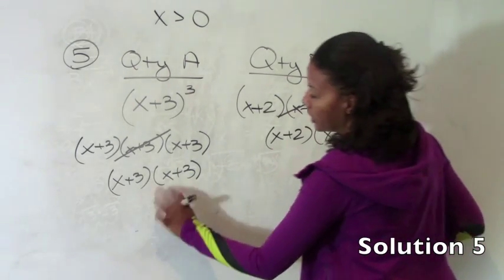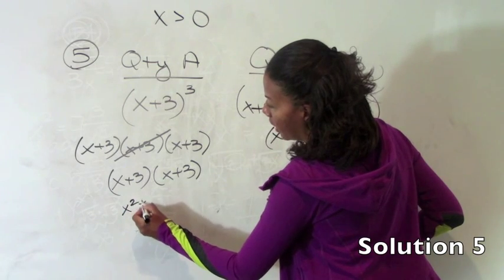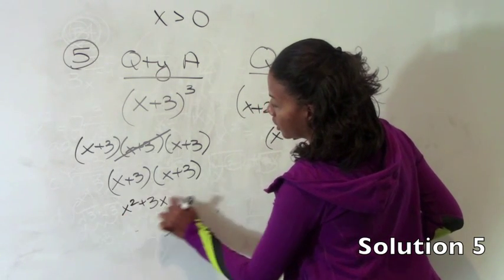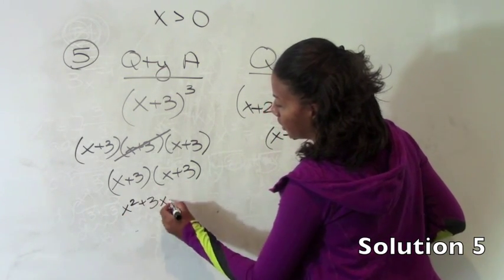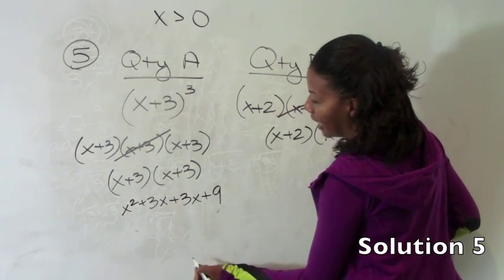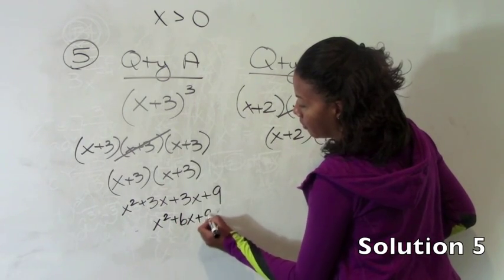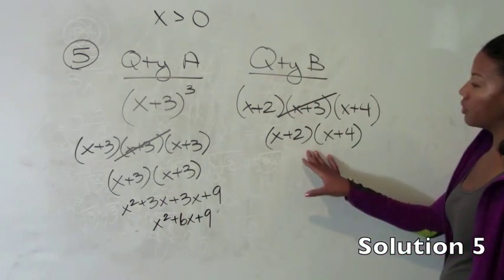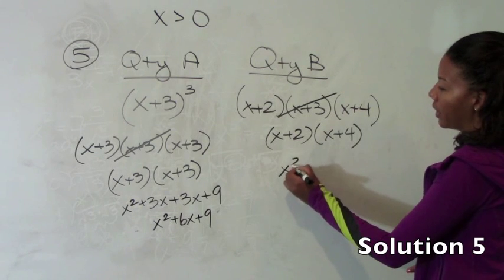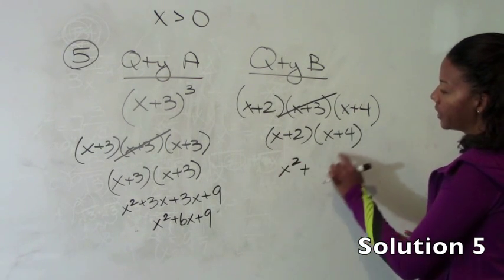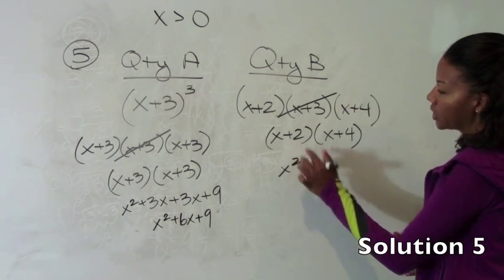So what we can do is FOIL our answers together and that will give us a better idea of what each one is. So x plus 3 times x plus 3 is going to be x squared plus 3x for the outside plus another 3x for the inside plus 9 for the last. That is x squared plus 6x plus 9.